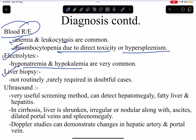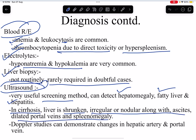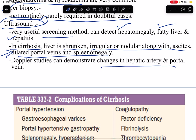Liver biopsy is not routinely done — it is rarely needed for doubtful cases. Ultrasonography is a very useful screening method. It can detect hepatomegaly, fatty liver, and hepatitis. In cirrhosis, ultrasonography shows a shrunken, irregular or nodular liver along with ascites, dilated portal veins, and splenomegaly — signs of portal hypertension. Doppler study can also demonstrate changes in the hepatic artery and portal vein.